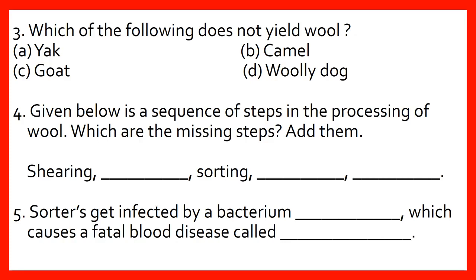Question No. 5: Sorters get infected by a bacterium ___, which causes a fatal blood disease called ___. Question No. 6: ___.